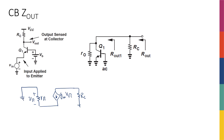Since I want to calculate R_out, I'm going to apply some V_test and look at I_test, knowing that I have turned off my input. So turning off V_in at the input means that we short it to ground — we short the two sides of it together. Since the other side is ground, we have connected the emitter to ground.